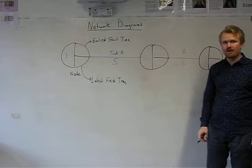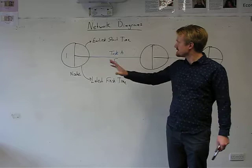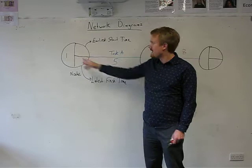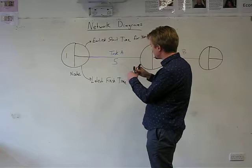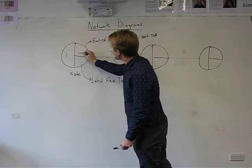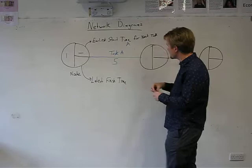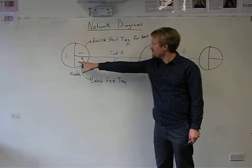Now, the key thing to know about this is that the earliest start time in this node is for the next task. So you say the earliest start time for the next task, which in this case would be task A. The earliest start time for task A is represented here. The latest finish time is for the previous task. So if you want to know where task A's latest finish time is, it's not here, but it's here.